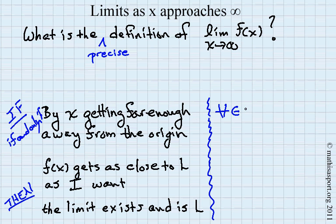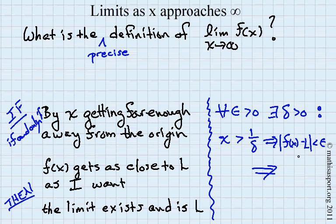What we say is: for every epsilon greater than zero, there exists a delta greater than zero such that getting x bigger than one over delta guarantees that the distance between f of x and L is less than epsilon. If you can do that, then we say that the limit as x approaches infinity of f of x is L. And that in fact works in both directions, so we draw the symbol like this. And to state it another way, if you can't achieve this condition, the limit does not exist.